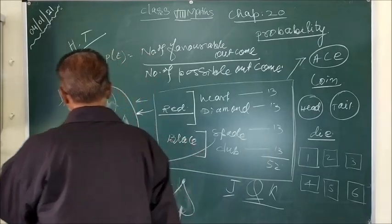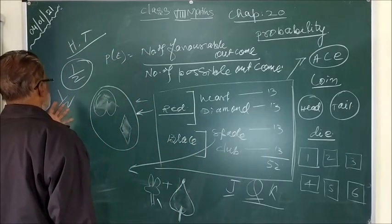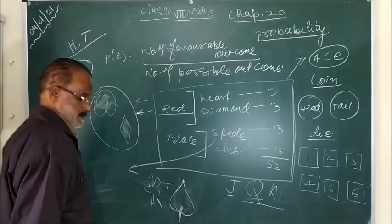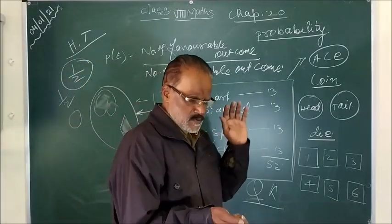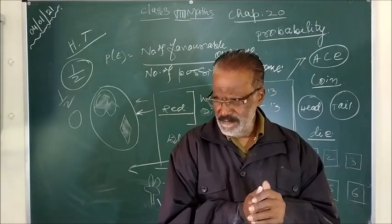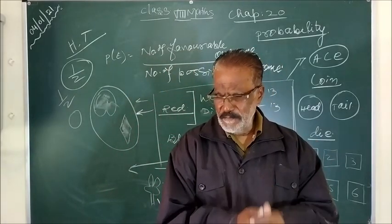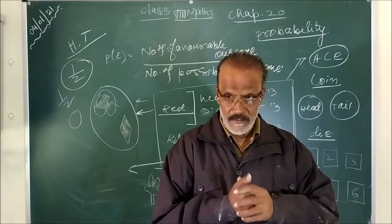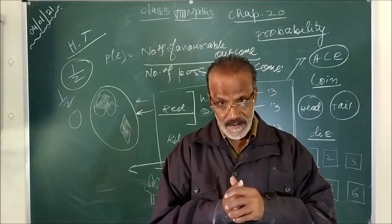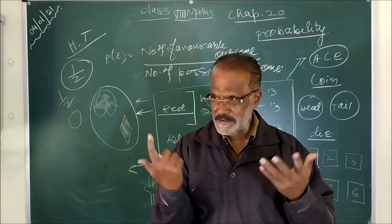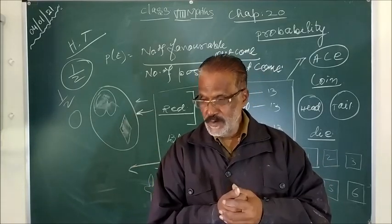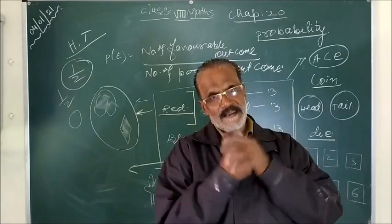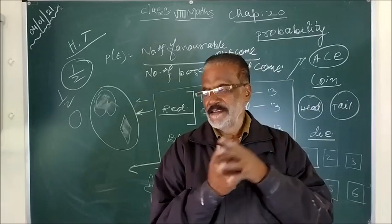And if I ask you what is the probability of getting 2 heads? What will be? No possibility. So the event that cannot happen, if you roll a die and if you are asked what is the possibility of getting 7? What will be the answer? Your answer will be zero. 7 is not possible. So impossible event.